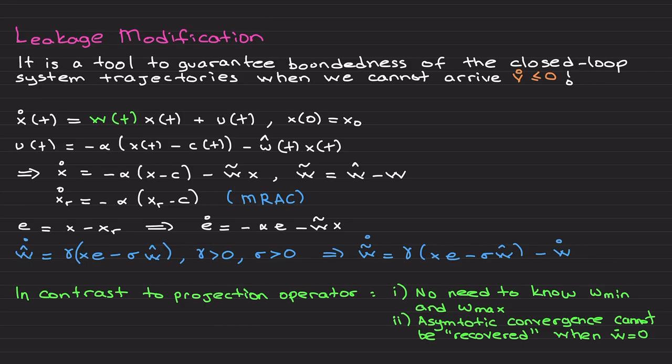Use 10 minus 10, 100 minus 100—it won't affect your performance. I will demonstrate this in the next video. But here with leakage modification, you simply don't need such a consideration. This is the advantage as compared to the projection operator.